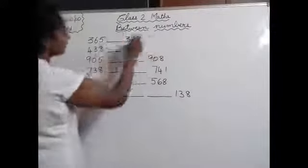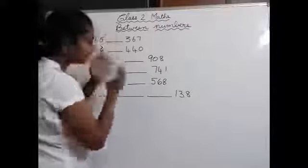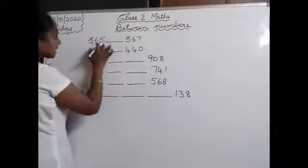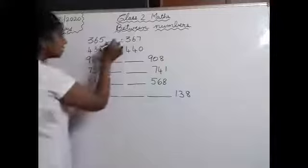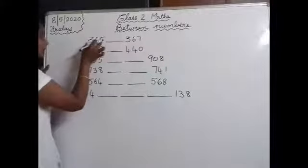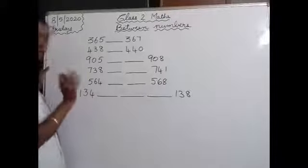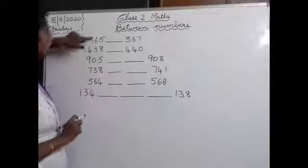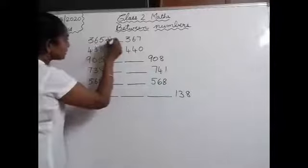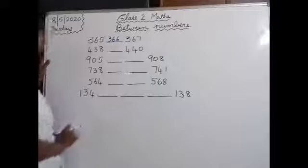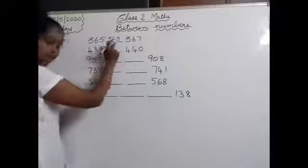Now, between numbers. We have to write the numbers in between both given numbers. First: 365 blank 367. Which number will come in between? Start saying from 361: 361, 362, 363, 364, 365, 366, 367. So the number in between is 366.